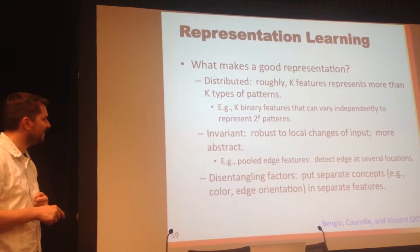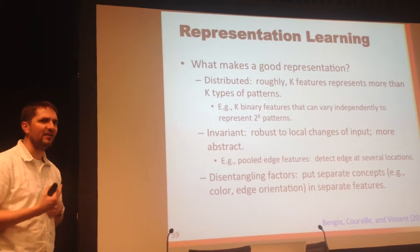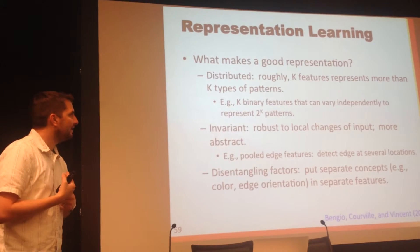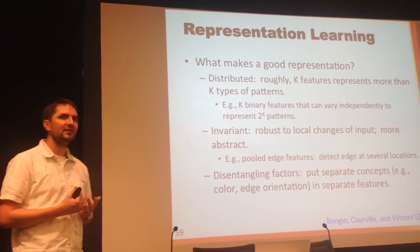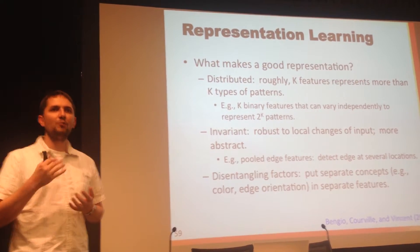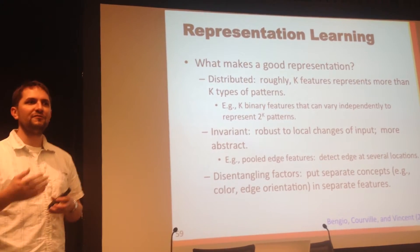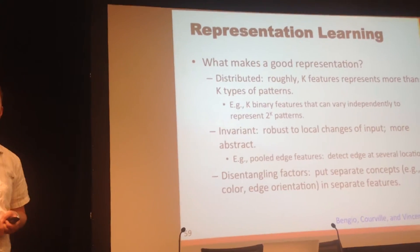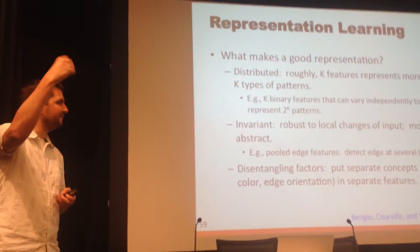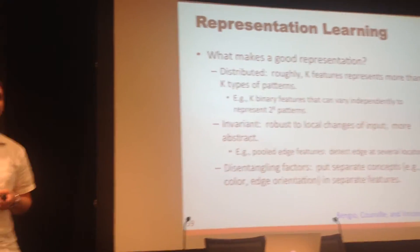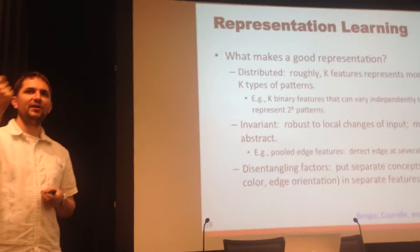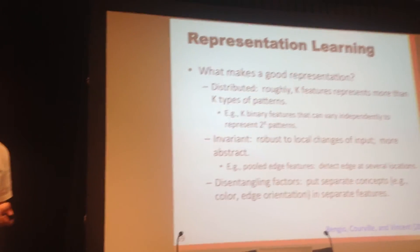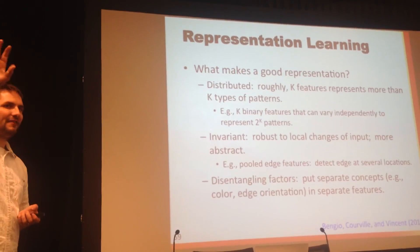Another interesting concept is called invariance. We want features that are invariant. The idea behind an invariant feature is that it's robust to trivial or extraneous changes in the input. For example, let's say I have a feature that I think is really predictive of whether something is a cat. What I would like that feature to do...